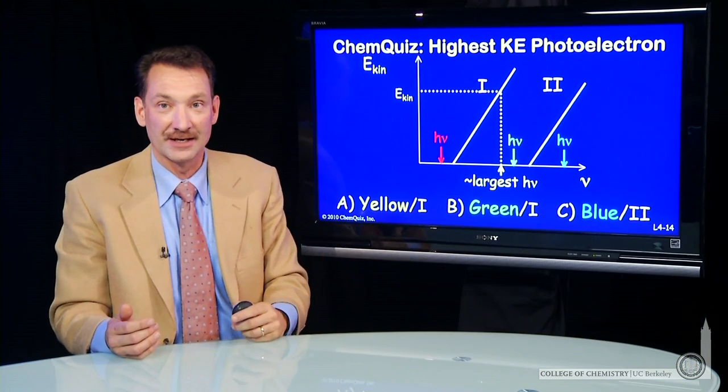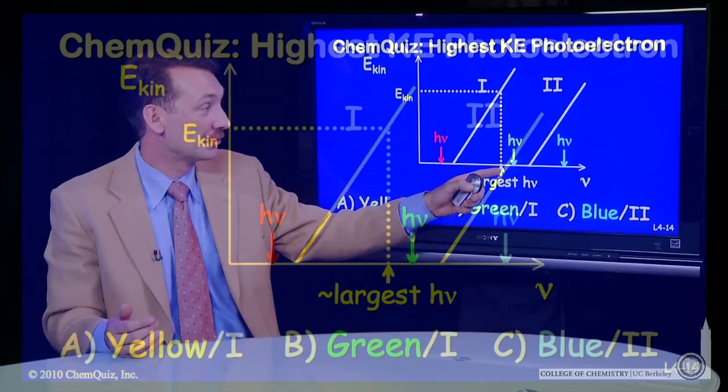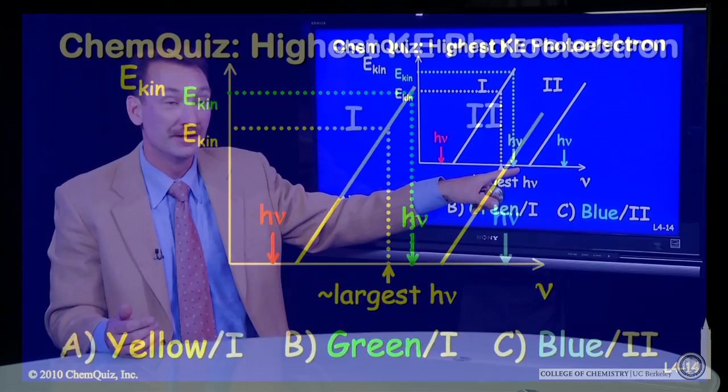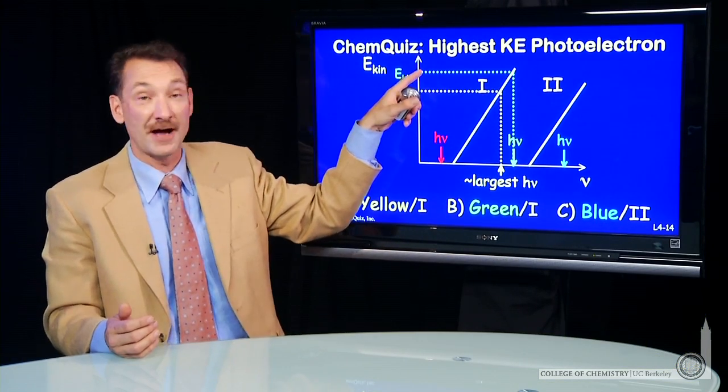What about green striking metal one? Well, we know the green photon will be higher energy than the yellow photon. Striking metal one will give a higher kinetic energy.